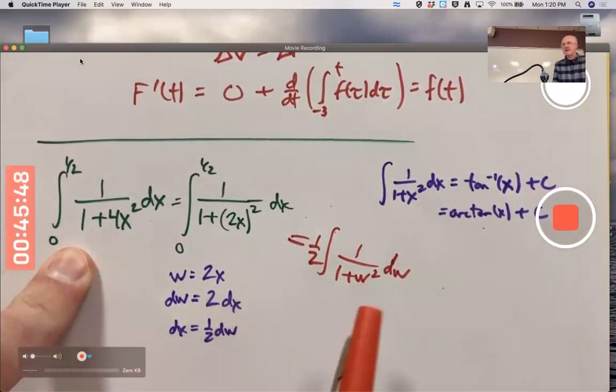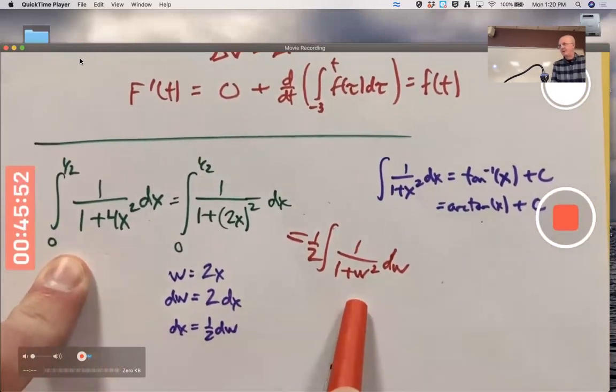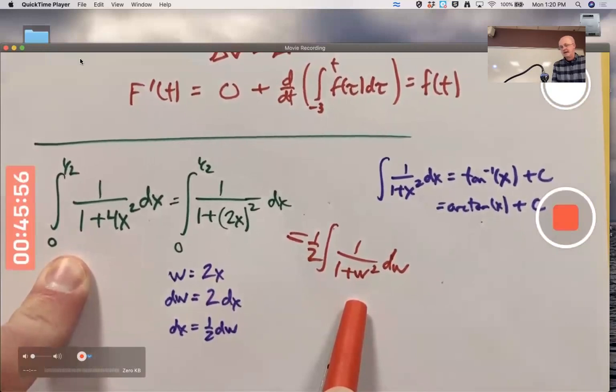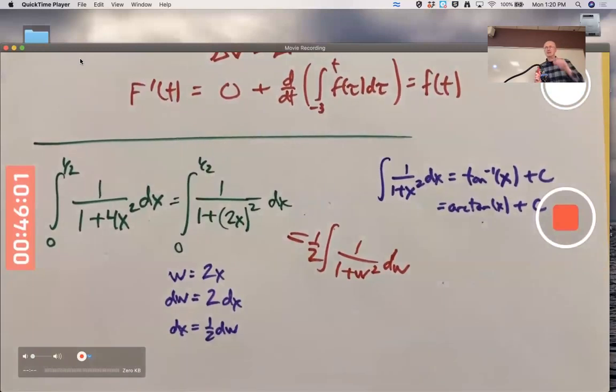This is a number; that's a family of functions with plus Cs. I need to write this as a definite integral. Here's the key place people make mistakes, and here's what I want you to do - listen carefully.